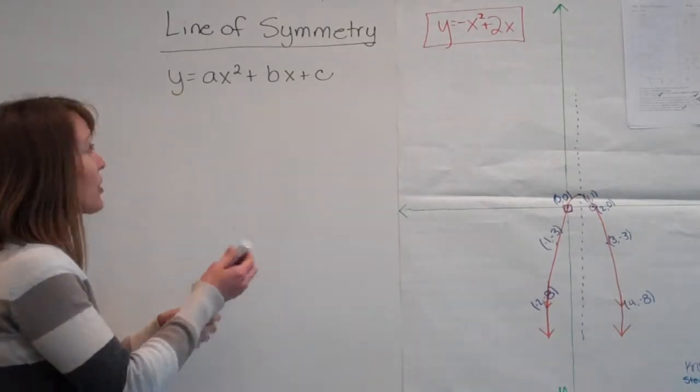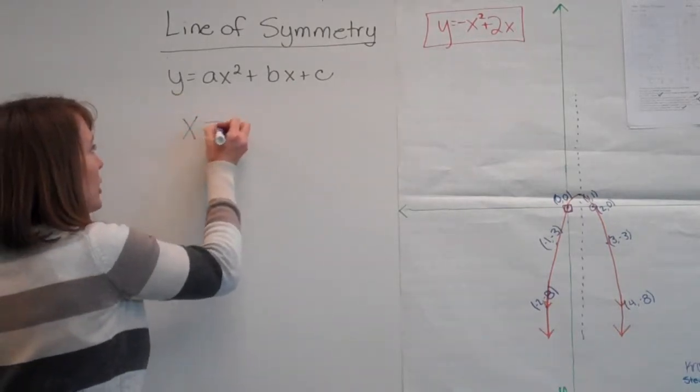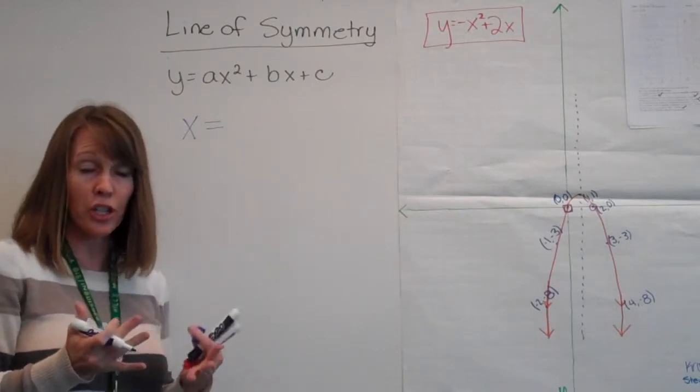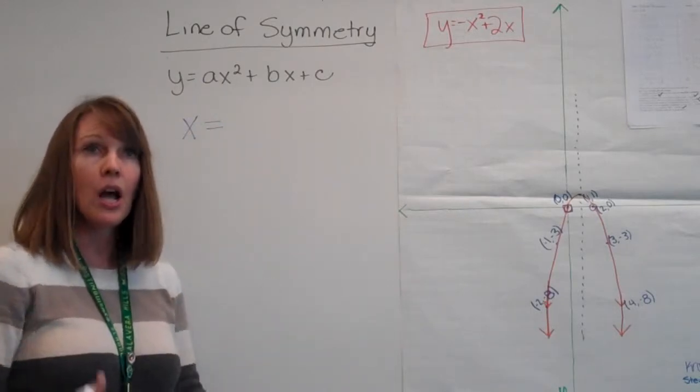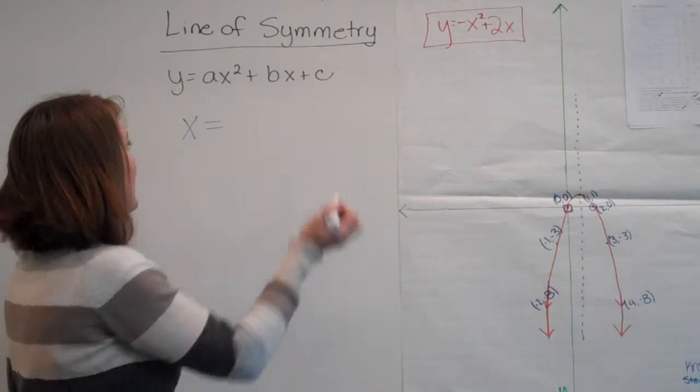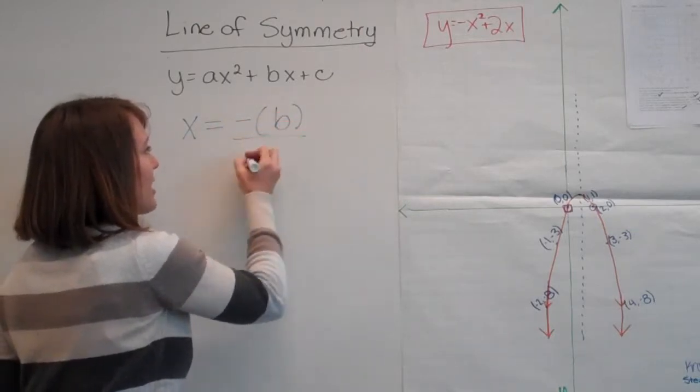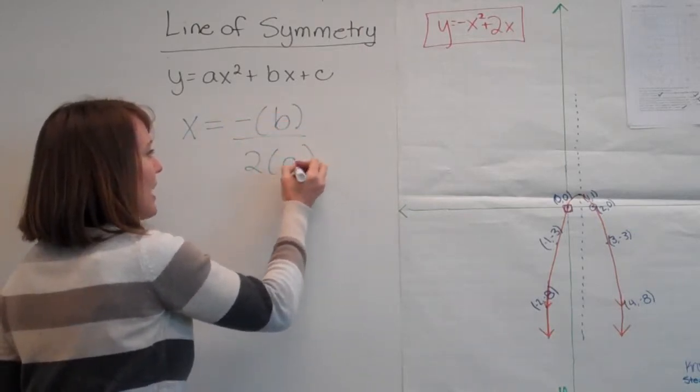So the equation for the line of symmetry is x equals, because remember, it is a vertical line, x equals a number. How do we find that number? Negative b divided by 2 times a.